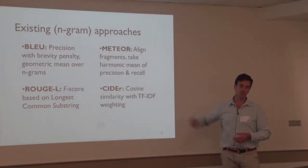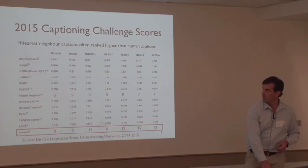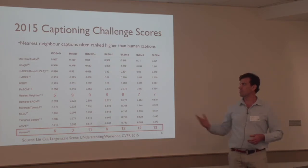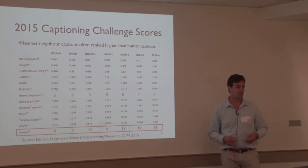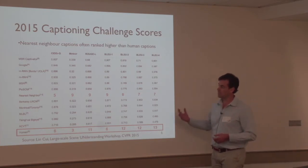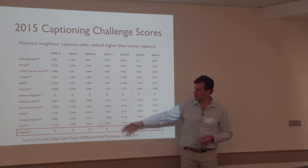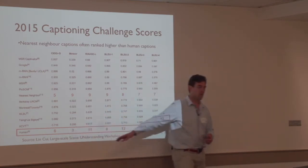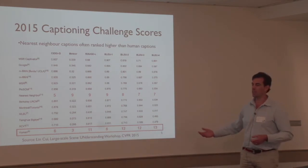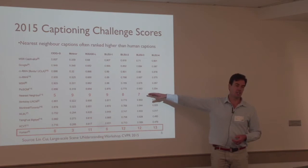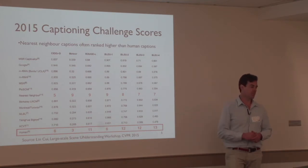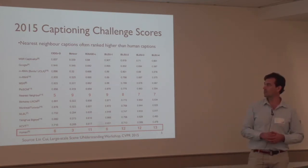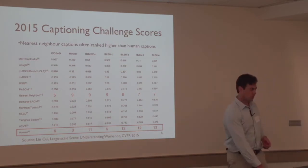There's much existing work from the machine translation and text summarization communities, and one metric specific to image captioning was developed by Georgia Tech. The common theme is that these approaches are all based on n-grams—we tokenize the language and look for subsequences of words common to both the candidate and reference captions. Looking at the ranked scores of the 2015 image captioning challenge, when ranked by CIDEr score, humans are way down the list even though we know human captions are actually much better, and simple nearest-neighbor approaches score higher than humans. There's something really wrong here—existing metrics weren't solving the problem.